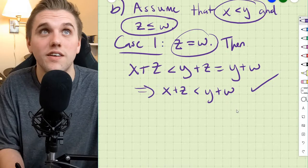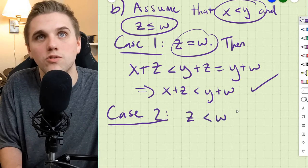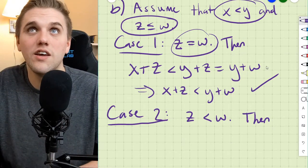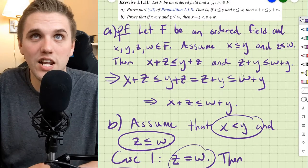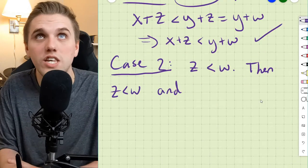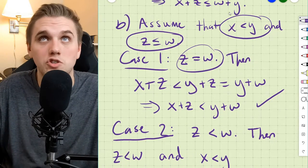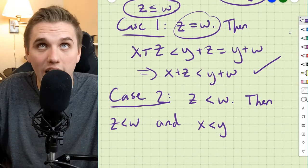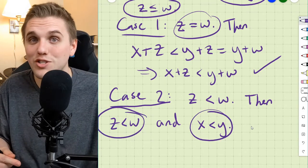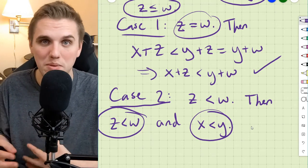That was case one. For case two, z is strictly less than w. We can use the same line of reasoning as in part a, but instead of using the less-than-or-equal-to symbol we can make it a strict inequality. So we have x is less than y and z is less than w. We can add elements to both sides of these inequalities so long as we're adding the same element to both sides — we're not allowed to add different elements, as that would be circular reasoning.